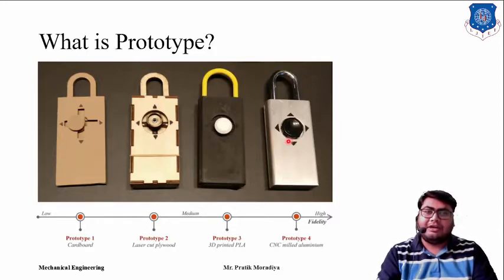And ultimately we have the CNC milled aluminum prototype. So this is actually what the product will look like. The product will be made of metal and we have a prototype which is made of metal. So this is the closest representation of the system. However, all these four are examples of prototype but they have different levels of fidelity.